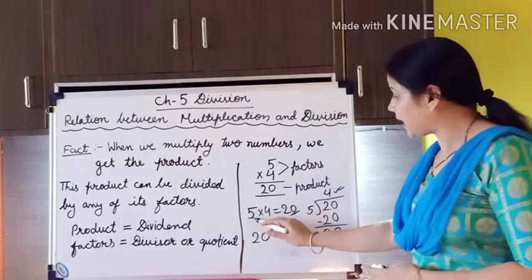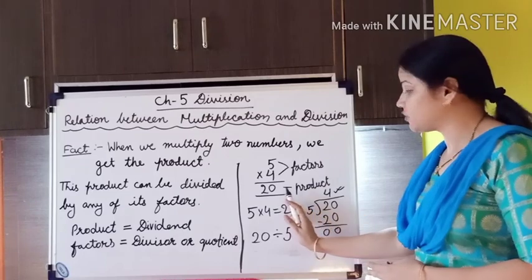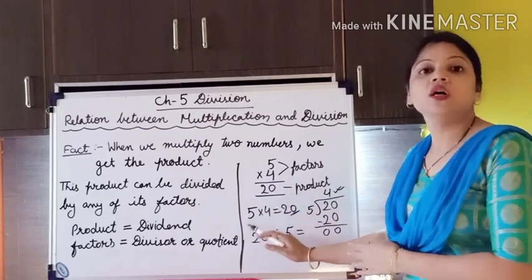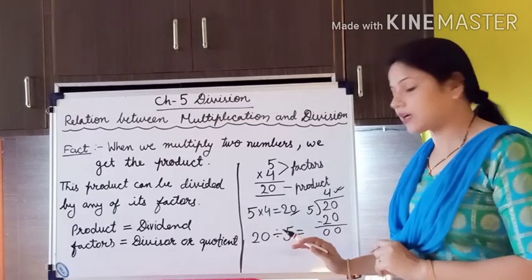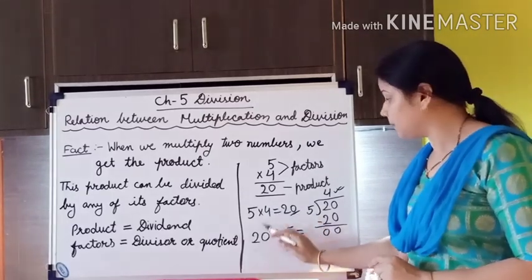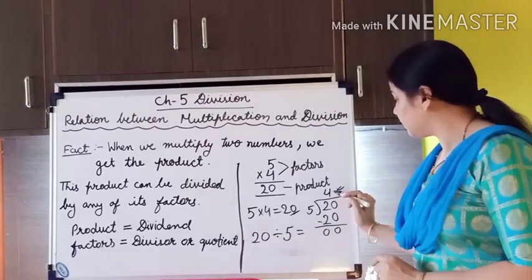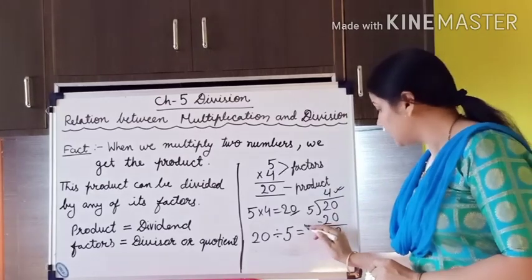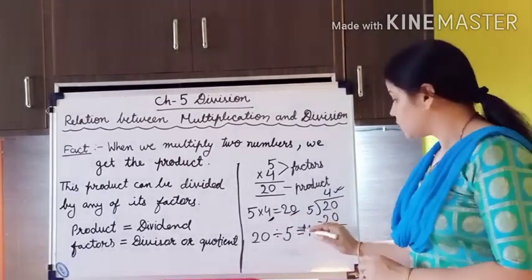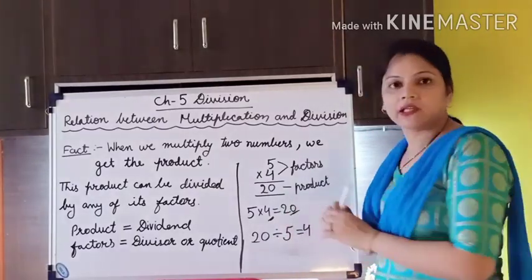So as you can see, 5 multiplied by 4 is equal to 20. We have changed this multiplication fact to the first division fact. The product becomes the dividend, the first factor becomes the divisor, and the quotient we get is the second factor. This is the first division fact from this multiplication fact.